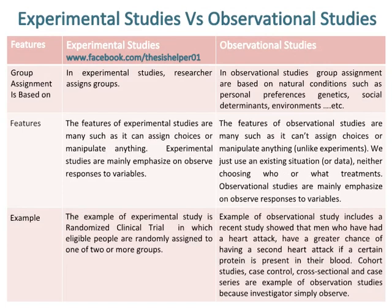The features of experimental studies include the ability to assign choices or manipulate anything, and they are mainly emphasised on observing responses to variables. The features of observational studies include the inability to assign choices or manipulate anything, unlike experiments — they use an existing situation or data, neither choosing who receives treatments.